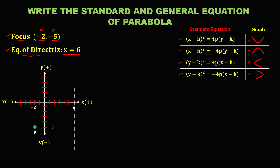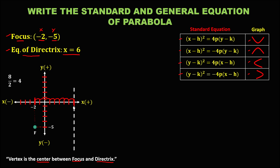The directrix is shown as a broken line. Now we need to find the vertex. In a parabola, the vertex is at the center between the focus and the directrix. To find that center, we first find the distance from the focus to the directrix using the counting method: 1, 2, 3, 4, 5, 6, 7, 8. The total distance is 8. To find the center, divide by 2: 8 divided by 2 equals 4.